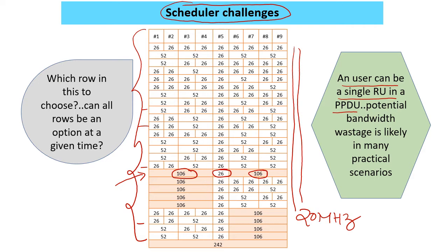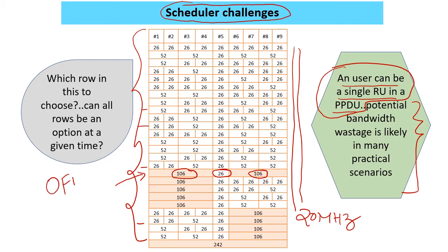So already we are working with a suboptimal case, and in that we make a choice. Invariably, I think there's going to be some bandwidth wastage, because we can't have a user being given multiple RUs and we can't consider all the possibilities. I do not know if this is one of the reasons why practical OFDMA performance in Wi-Fi 6 has lagged behind expectations.